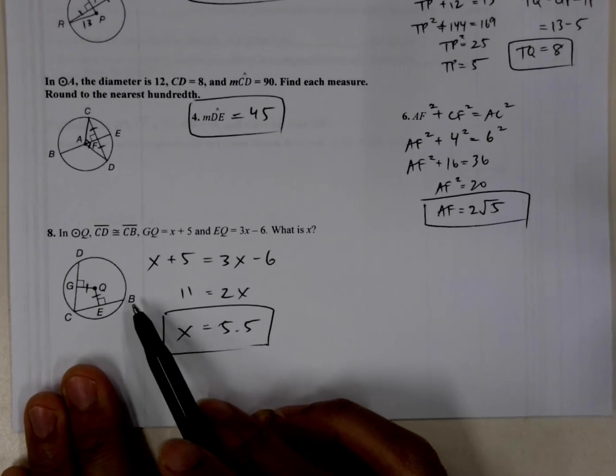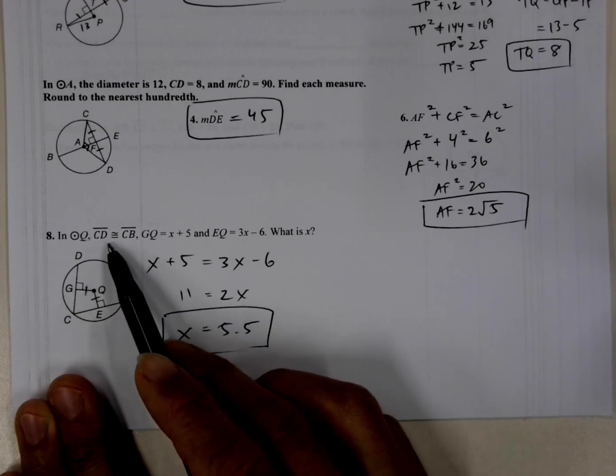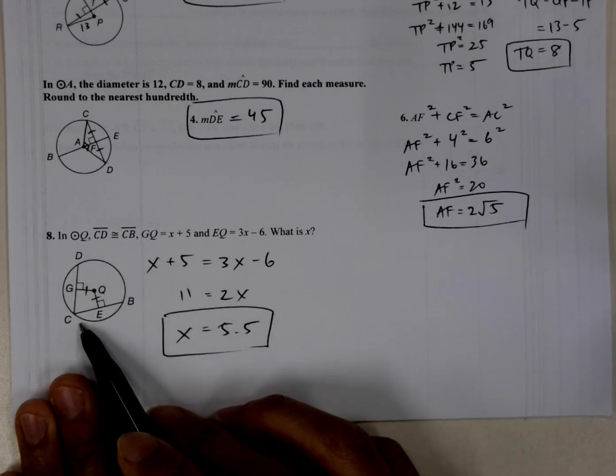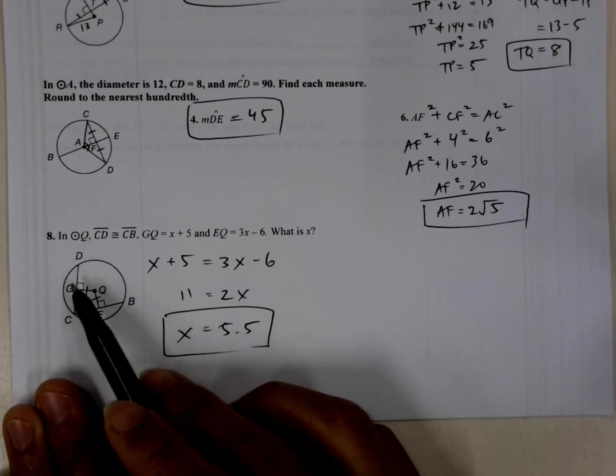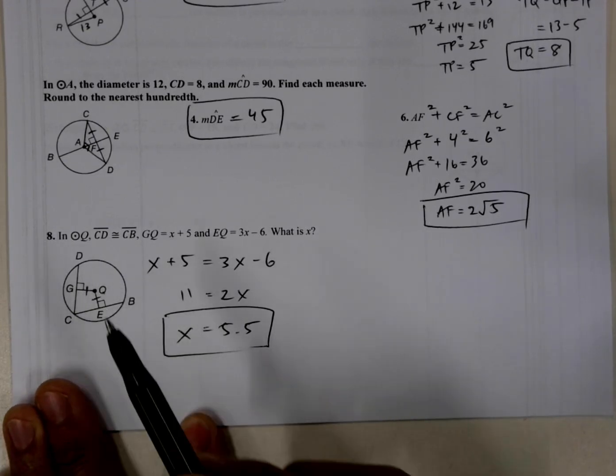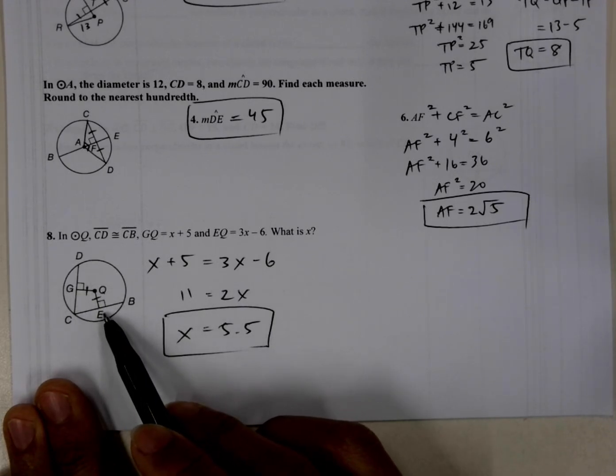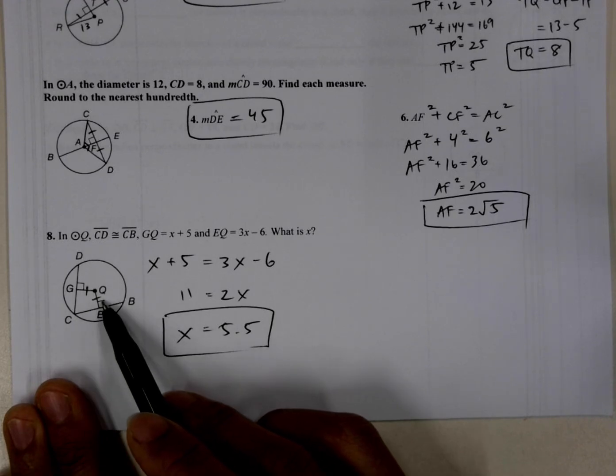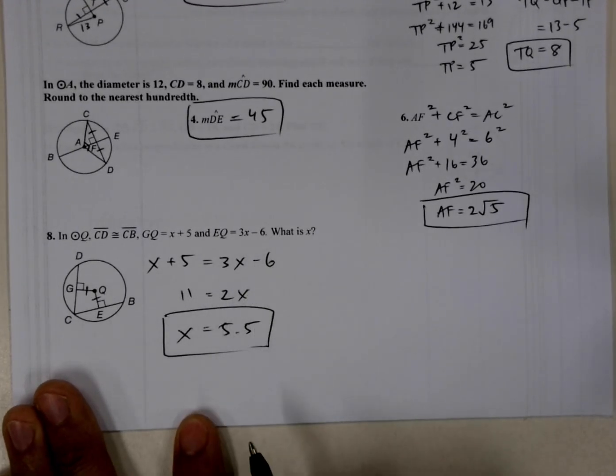And then lastly, this one down here, what do we know? We know that CD is congruent to CB. And if they're congruent, then that means that these two chords are equal distance from the center of the circle. So we know that GQ is congruent to QE, and if that's true, then we could just set these equations equal to each other and solve for X, 5.5.